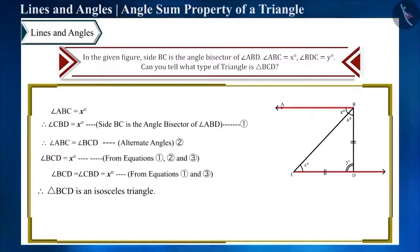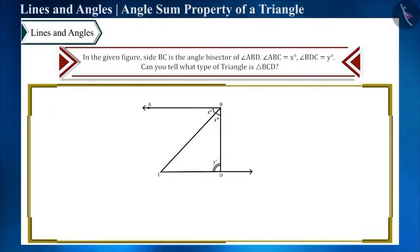No. Unless we are given that the sides are parallel, we cannot say that angle BCD and angle CBD are alternate angles and will be equal. We can find the value of angle BCD by using the angle sum property of a triangle.